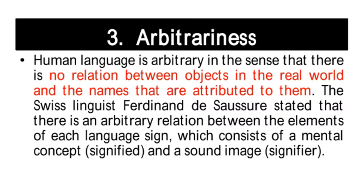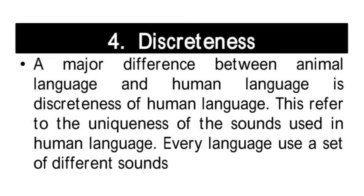The third property is arbitrariness. Human language is arbitrary in the sense that there is no relationship between objects in the real world and the names attributed to them. The Swiss linguist Ferdinand de Saussure stated that there is an arbitrary relation between the elements of each language sign, which consists of a mental concept — the signified — and a sound image — the signifier.